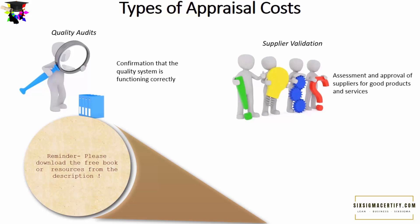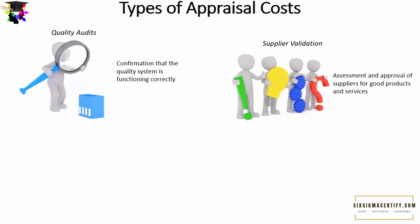Another type of appraisal cost is supplier validation — the assessment and approval of suppliers for good products and services. Manufacturing industries depend heavily on suppliers, so the quality of their final product is ultimately dependent on the quality of raw materials. Supplier validation can be based on quality, delivery time, and reproducibility of purity — whether the supplier can genuinely provide quality materials each time.